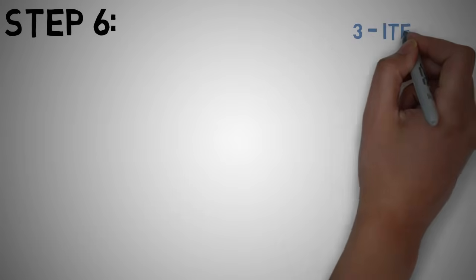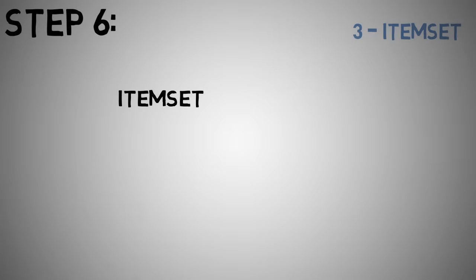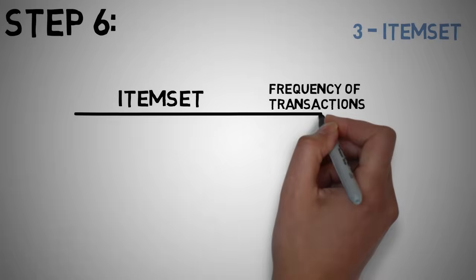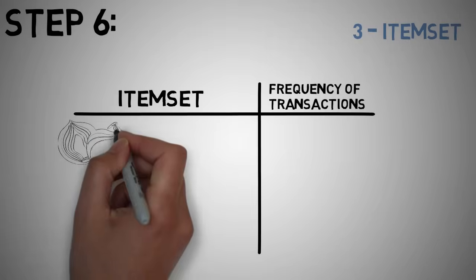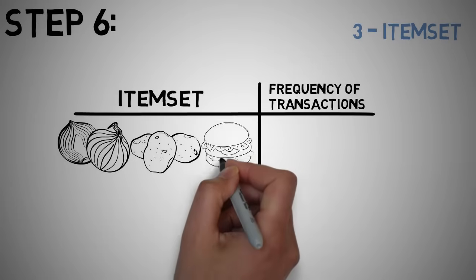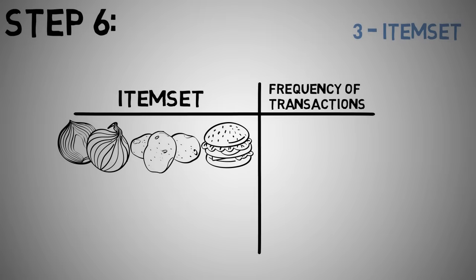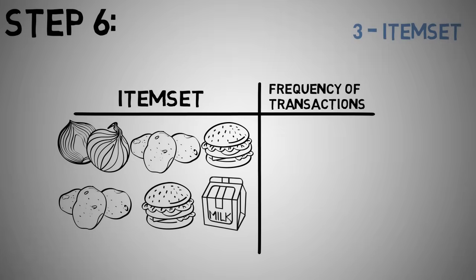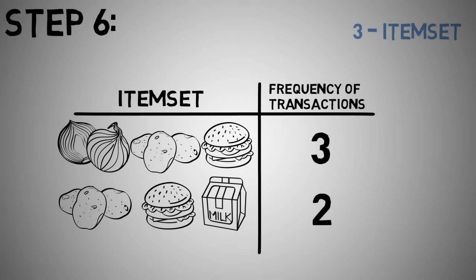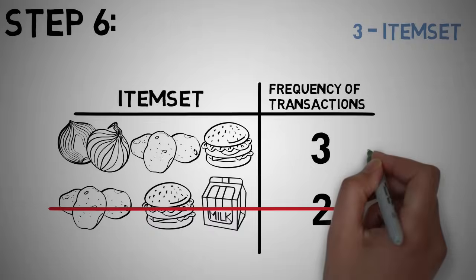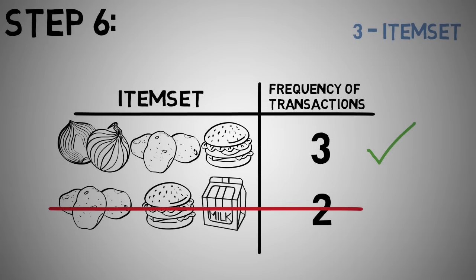Step 6: now let's say we would like to look for a set with 3 items purchased together. We use the items found in step 5 and create sets of 3 items using a rule called self-join. From pairs onions–potatoes, onions–burgers, potatoes–burgers, and potatoes–milk, we look for pairs with an identical first element. Onions–potatoes and onions–burgers gives us onions, potatoes, and burgers. Potatoes–burgers and potatoes–milk gives us potatoes, burgers, and milk. We then find the frequency for these two item sets: 3 for onions–potatoes–burgers and 2 for potatoes–burgers–milk. Applying the threshold rule, onions, potatoes, and burgers is the only significant 3-item set.